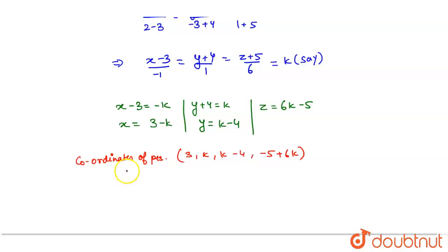As the point lies on the plane 2x + y + z = 7, now substitute these values.